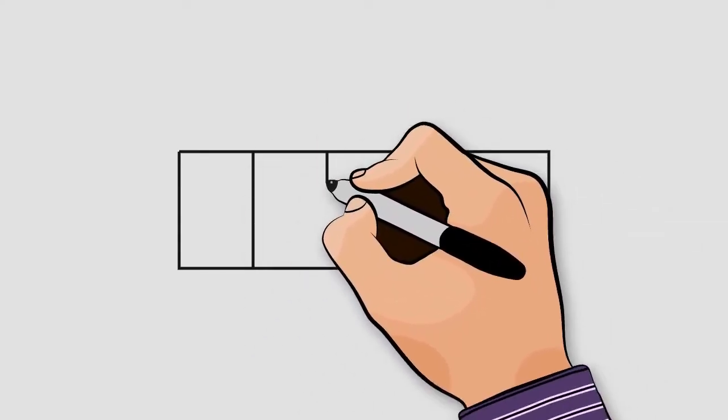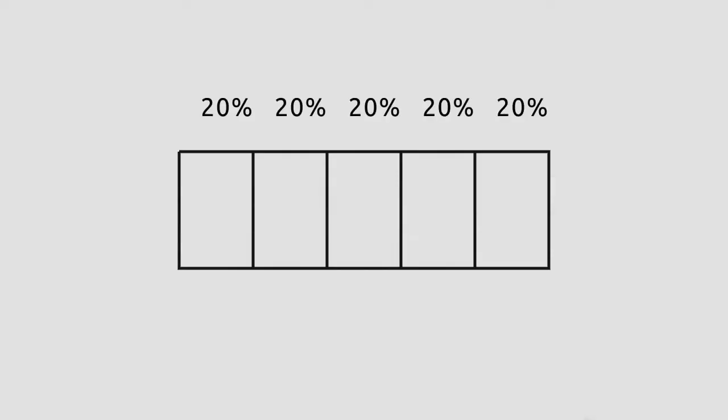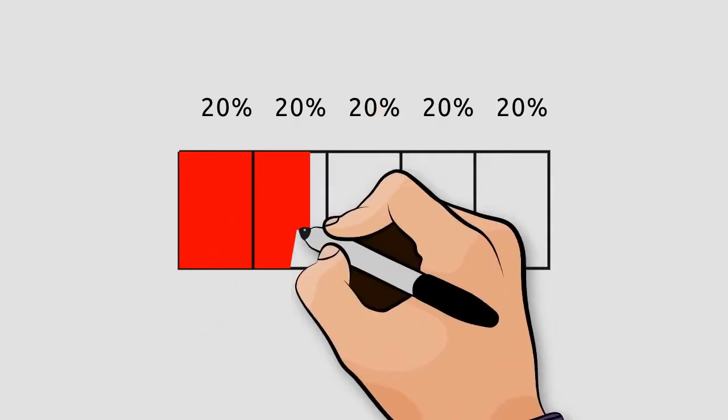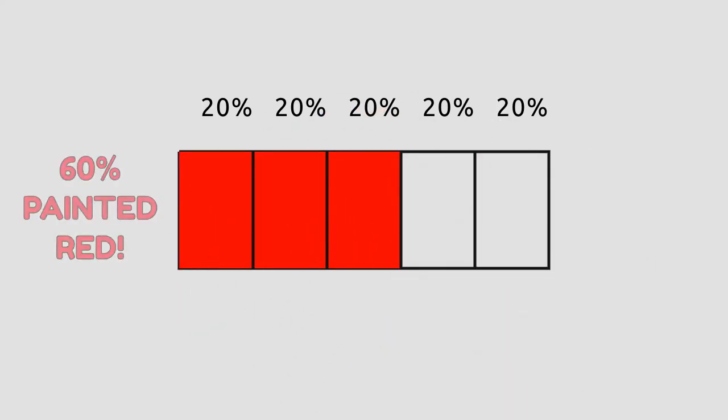Now, suppose we divide the rectangle into 5 equal parts. Each of these parts represents 20% of the entire rectangle, because 100% divided by 5 equal parts gives us 20% for each part. Now, if we want 60% of our rectangle to be painted red, we only have to paint 3 parts red. And if we want 40% to be painted blue, we paint the remaining 2 parts blue.